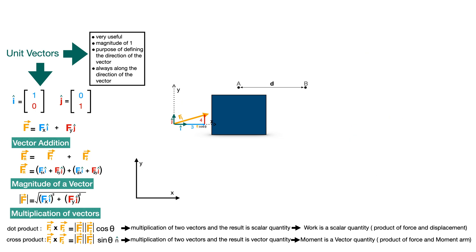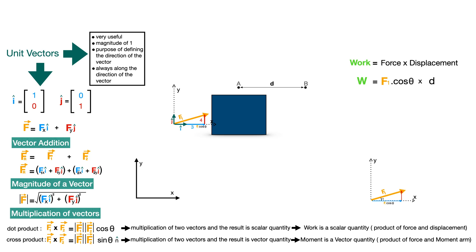Let's see how and why we resolve a vector into its components. The applied force moves the box from point A to point B, which constitutes work done. Work is the product of displacement and the force in the direction of displacement. Since the force has two components and the box is moving along the x-axis, we are only interested in the component of force along the x-axis. Using basic trigonometry, the magnitude of the x and y components can be obtained, and the component of force producing work equals F cos θ.